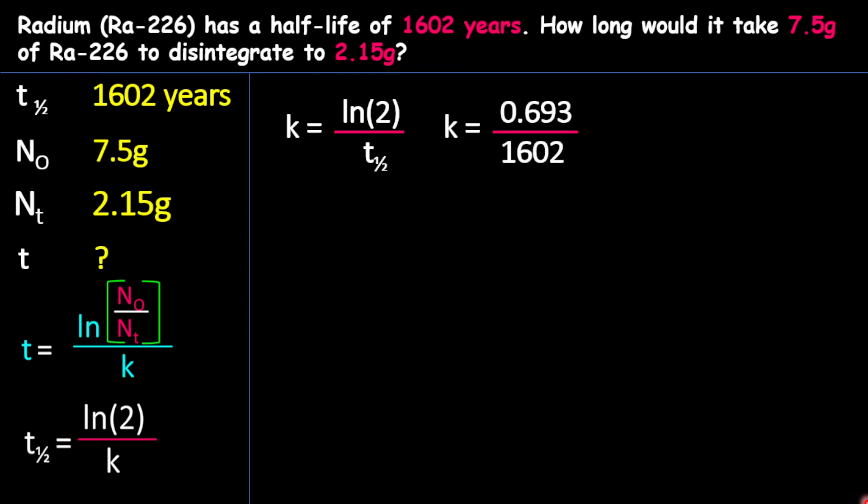And so therefore this equals 0.693, which is natural log 2, divided by 1,602, which is the half-life. And we should get here 0.000433 per year. All right, and that's the rate of disintegration.